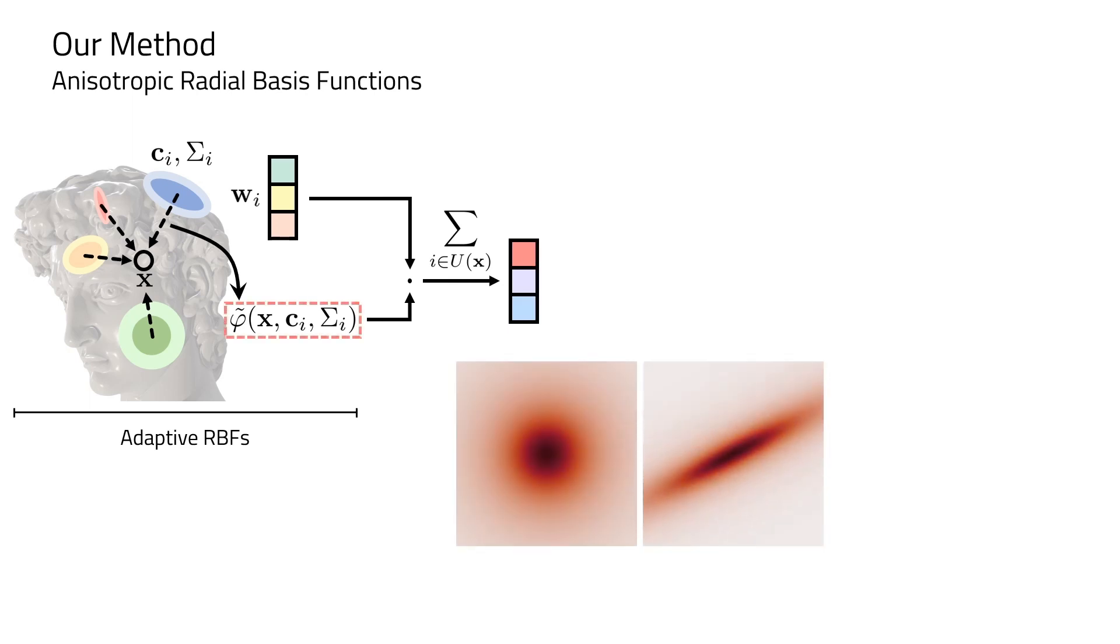When using anisotropic RBFs, the bases can have flexible patterns, ranging from circle, ellipse to even close to a line.